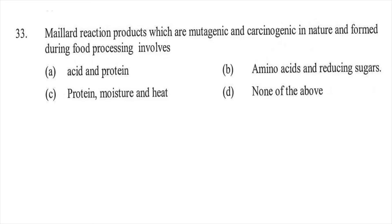Question thirty-three: Maillard reaction products, which are mutagenic and carcinogenic in nature and formed during food processing, involve — option A acids and protein, option B amino acids and reducing sugars, option C proteins, moisture and heat, or option D none of the above. The right answer is B, amino acids and reducing sugars.